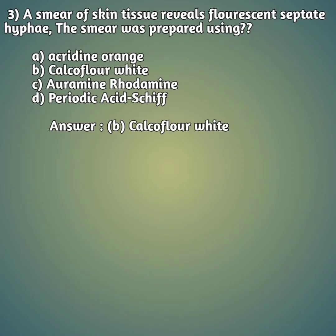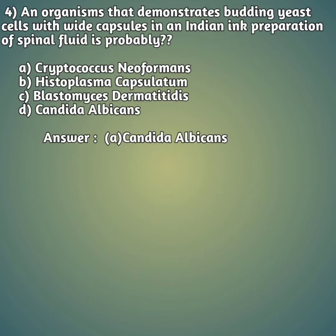Third question: a smear of skin tissue reveals fluorescent septate hyphae. The smear was prepared using which type of reagent? Option A: acridine orange; option B: calcofluor white; option C: auramine rhodamine; option D: periodic acid-Schiff (PAS). The right answer is option B, calcofluor white.